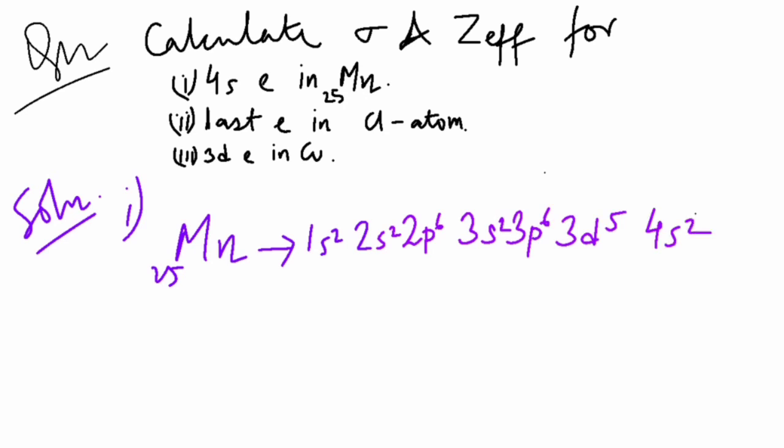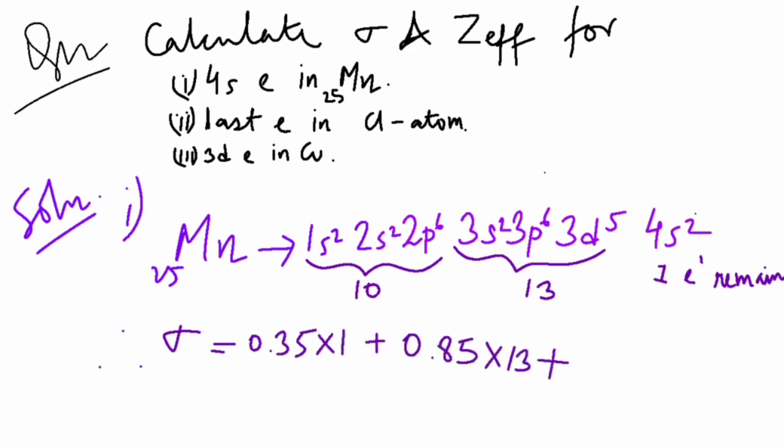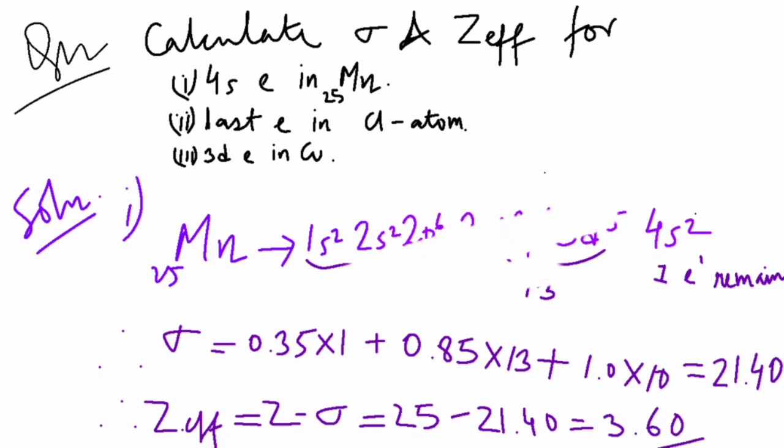The number of remaining electrons in 4s² is 1 since one is for study. The number of electrons in n minus 1, that is 3s², 3p⁶, 3d⁵ is 13 and rest 10. So the value of sigma is 0.35 × 1 plus 0.85 × number of electrons in n minus 1, that is 13, then 1.0 × 10 and we get the value after solving is 21.40. Z_effective will be Z minus sigma, 25 minus sigma's answer and we get 3.60.